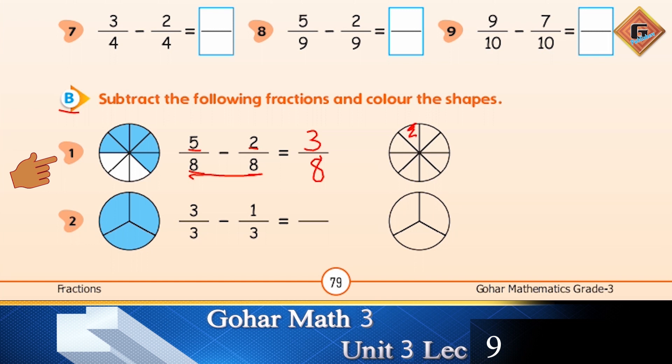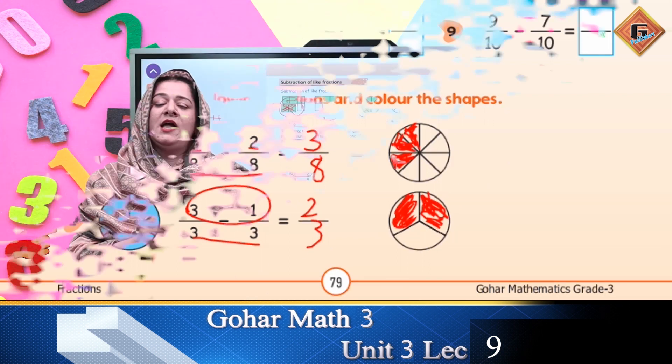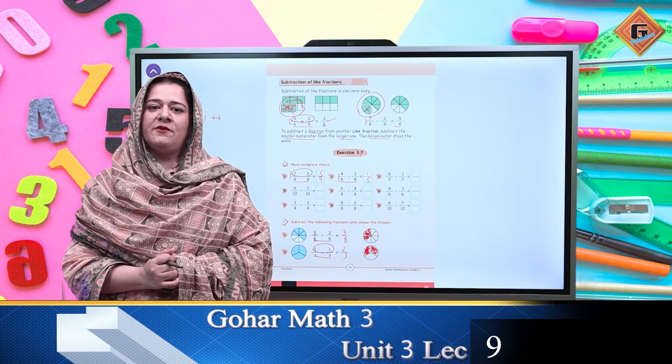Aur yaha pe hum is ko 3 ko, 3 parts ko hum color kar lenge. Thik hai, to show our fraction. Now the second one: 3 over 3 minus 1 over 3. Aapka denominator same rahe ga and 3 minus 1, aap us mein se ek minus kar denge to 2. To aapke in 3 parts mein se kitne aap shade karenge? Good, you are going to color 2 parts. Very good, well done! I hope you have understood the concept clearly. Allah Hafiz.